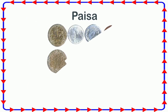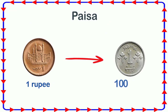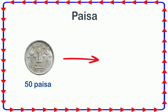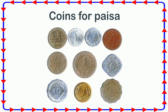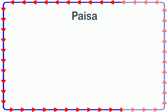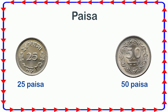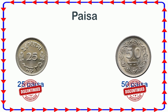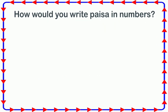Paisa is a smaller currency than rupee. One rupee is equal to hundred paisa, so if you have fifty paisa it means you have half a rupee. Years ago there used to be coins for paisa as well, for example one for twenty-five paisa and another for fifty paisa, but they have been discontinued and now only rupees and coins are available. How would you write paisa in numbers?